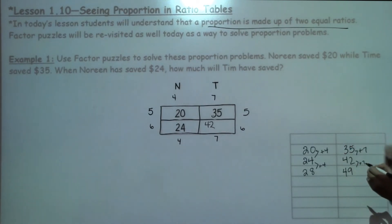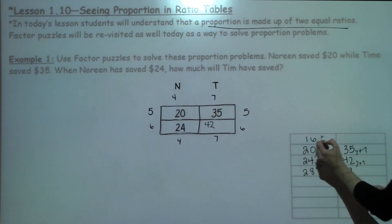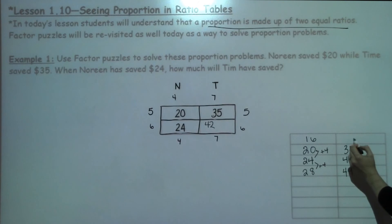I can also work backwards on this pattern as well. So I can take 20 minus 4, which would give me 16, and I can take 35 minus 7, which would give me 28. Students can go ahead and continue these patterns to fill out the relationship between how much Noreen and Tim have saved.